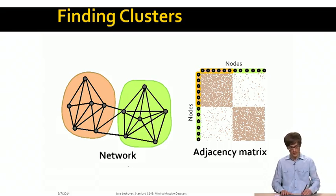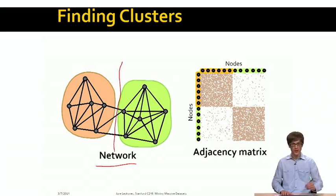Here I give you an example of this where I show a simple example of a network with kind of two clusters and a small set of edges that crosses the two clusters, and the same view of the same kind of data but now through adjacency matrix.